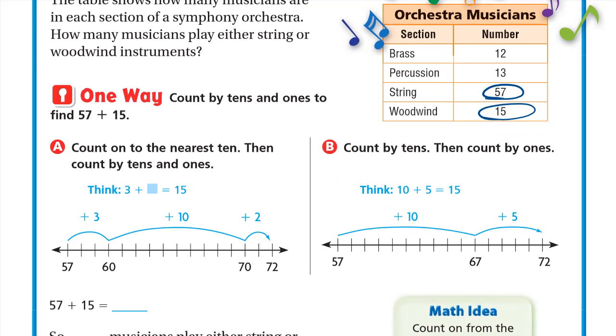You may use your old way, 57 plus 15 like this. 5 plus 7 is 12, I write 2 and 1 up. And here 5 plus 1 is 6 plus 1 is 7. So the answer is 72. But here we will use mental math like the following.